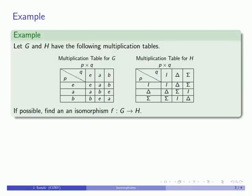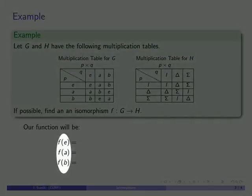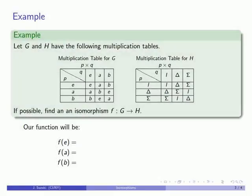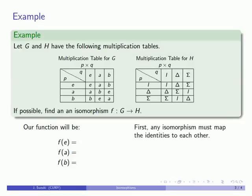We can try and construct an isomorphism. I only have three elements to map in G: E, A, and B. So what's f of E? Well, the first thing we know is that isomorphisms map identity elements to identity elements, so f of E must be I.